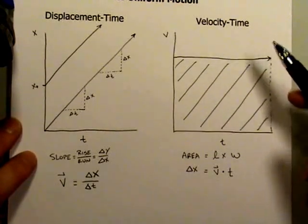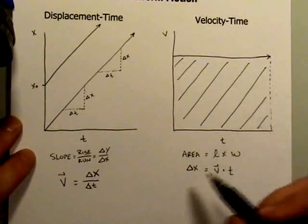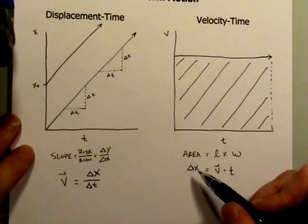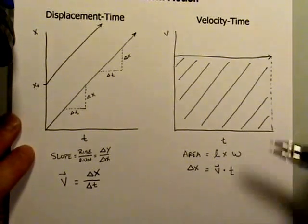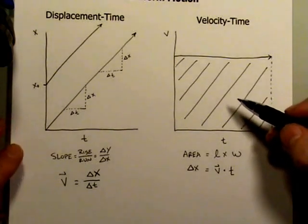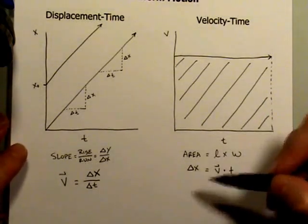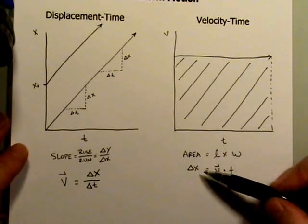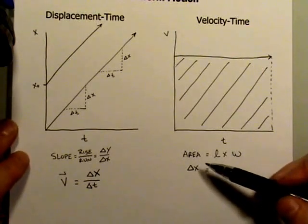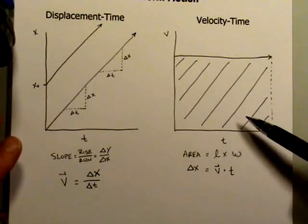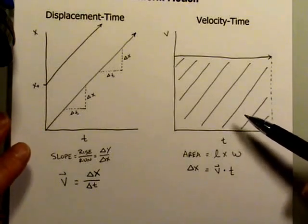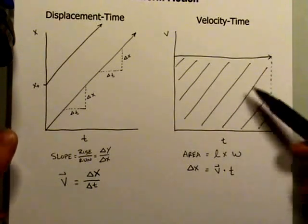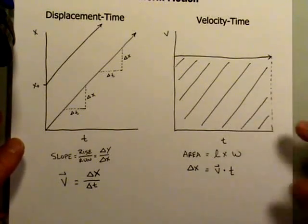The velocity-time graph can only show you the change in displacement — it cannot show you where you started. It can only show how much you've added to your starting point. So if you're given a velocity-time graph and asked for the final displacement, you'd need to be told in the problem what the initial displacement was. That's a limitation of the velocity-time graph — still very useful, but it can only tell you how much has been added to the initial position.